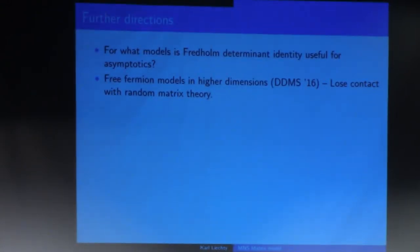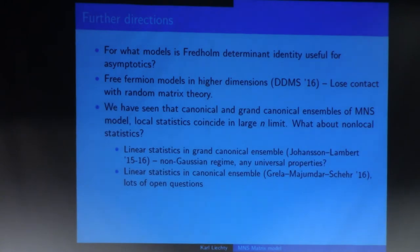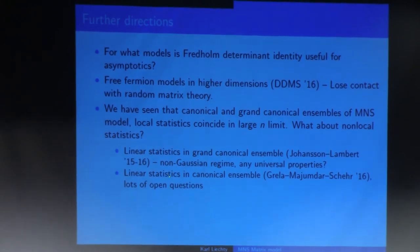Back to the Free-Fermion model. We gave results in one dimension. You can ask about higher dimensions, which was done in the physical setting by the DDMS group last year. But I don't know of any other mathematical results. We do, I think, lose contact with random matrix theory in higher dimensions. I don't think there's any random matrix interpretation of, say, two-dimensional Free-Fermions. In these canonical ensemble and the grand canonical ensemble of this MNS model, we saw that the local statistics are the same. So, somehow, in the large limit, the local statistics are the same, which is to be expected. But it's another question, what about non-local statistics? So, for the grand canonical ensemble, there's recent work by Johansen and Lambert, and they found, so they considered temperature as a parameter, but also the scaling for the limit, for the linear statistics.